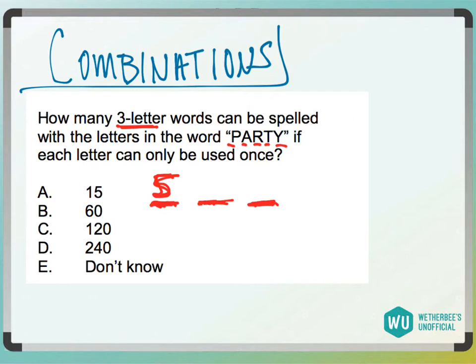Then they can only be used once, so now I have four for this, and then three for this, and then we multiply. Five times four is 20. Twenty times three is 60.